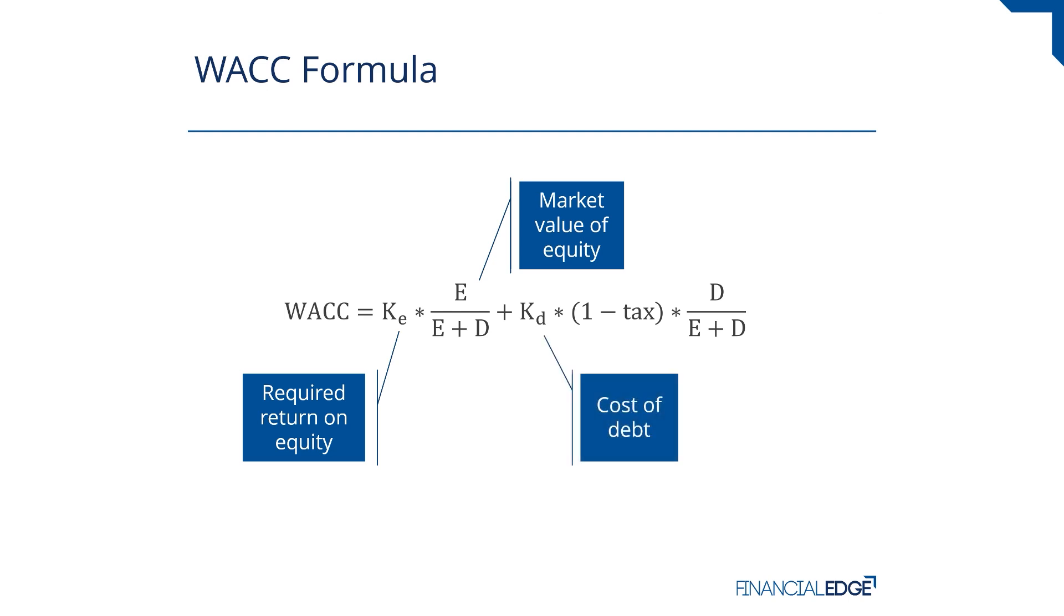Our cost of debt is the required return by debt holders. Let's say they wanted a return of 5%. You then multiply that by debt over equity plus debt, and again it's the market value of debt we use. The big difference with debt is this cost of debt is multiplied by 1 minus tax. Now why is that?